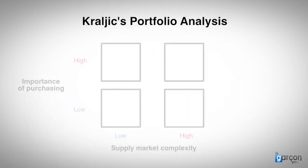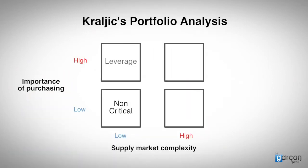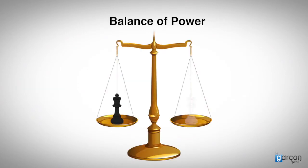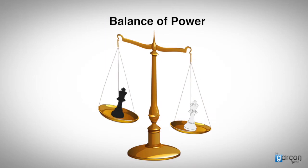Kralich suggested that each quadrant in the portfolio warranted different strategies, and the same tactic was not appropriate in each quadrant. Kralich also proposed that understanding the balance of power between the buyer and the supplier was important to determine whether the buyer's strategy was to maintain the current situation or to change the status quo.